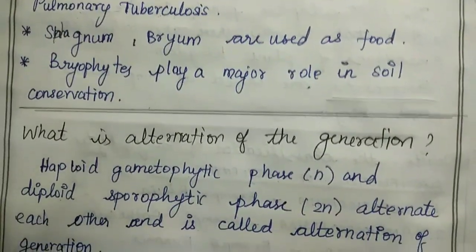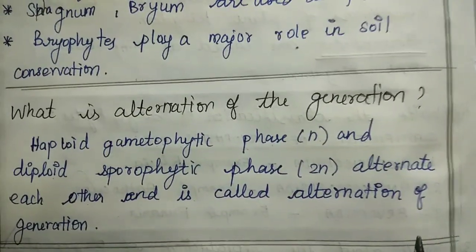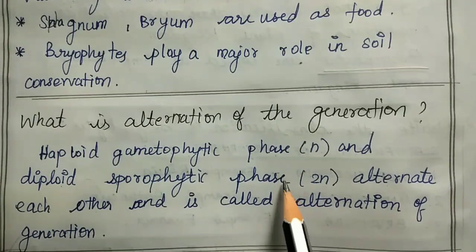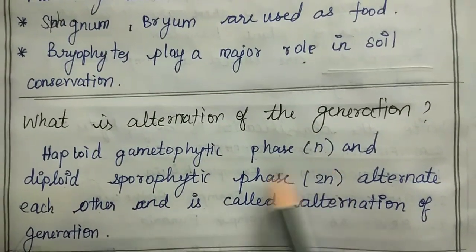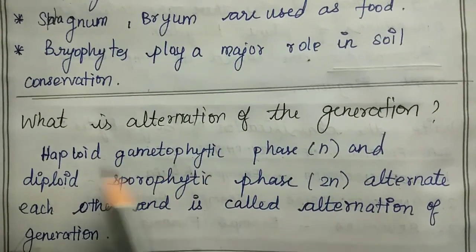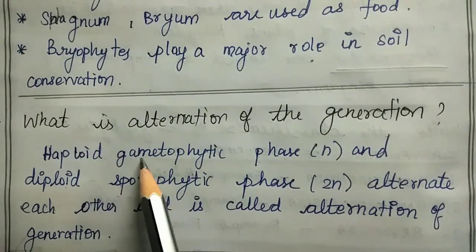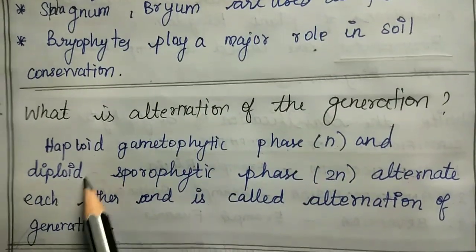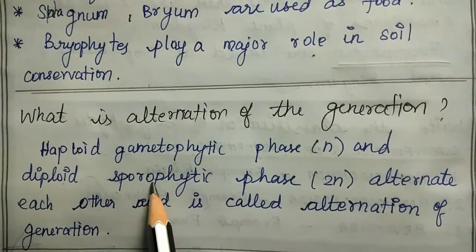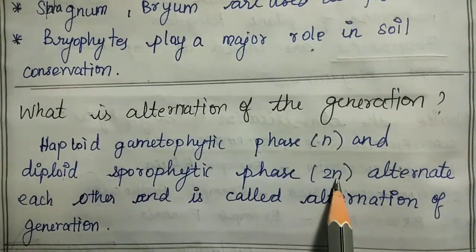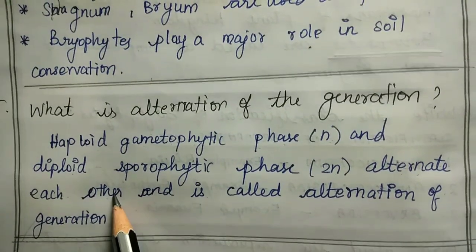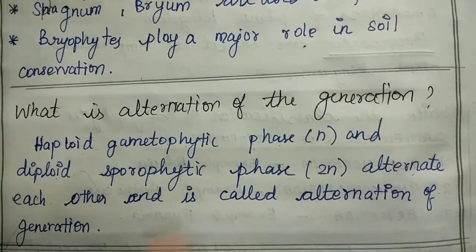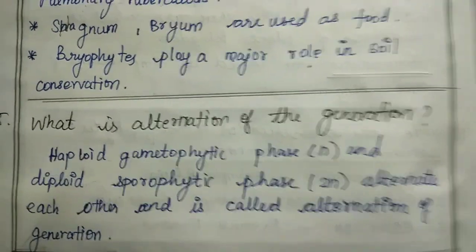Fifth question: what is alternation of generation? Alternation of generation involves haploid and diploid phases. Haploid gametophytic phase is n and diploid sporophytic phase is 2n. They alternate each other and this is called alternation of generation.